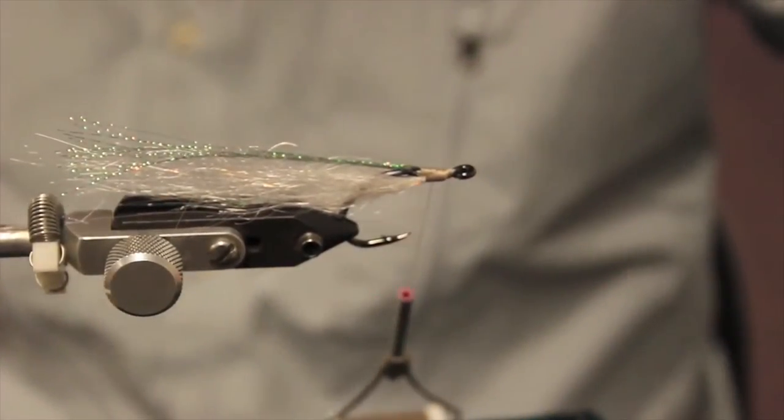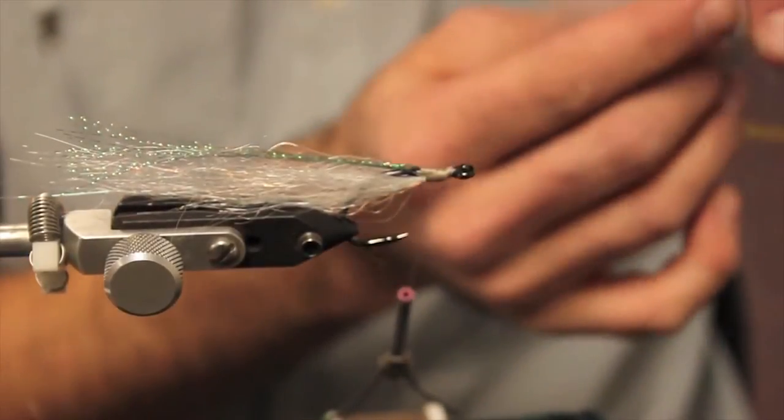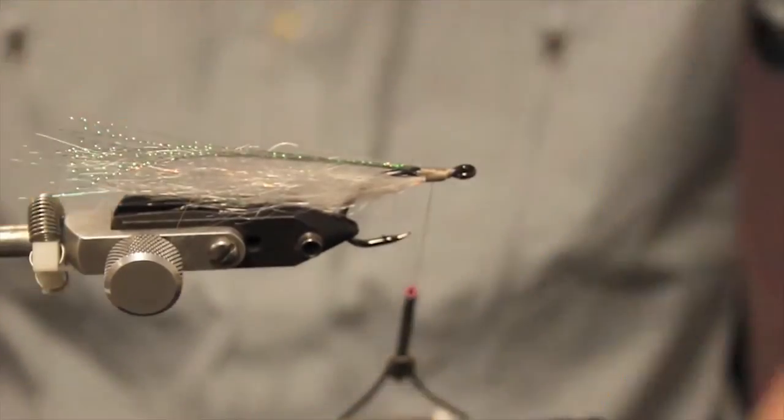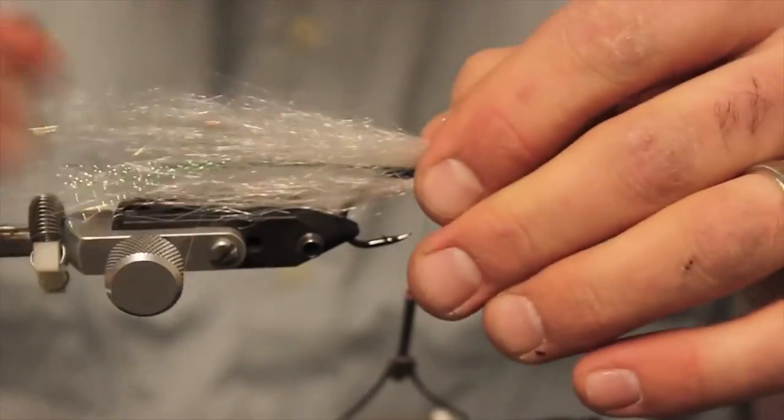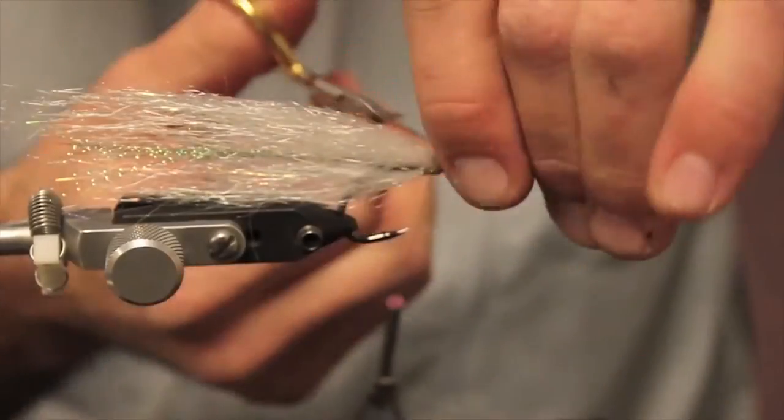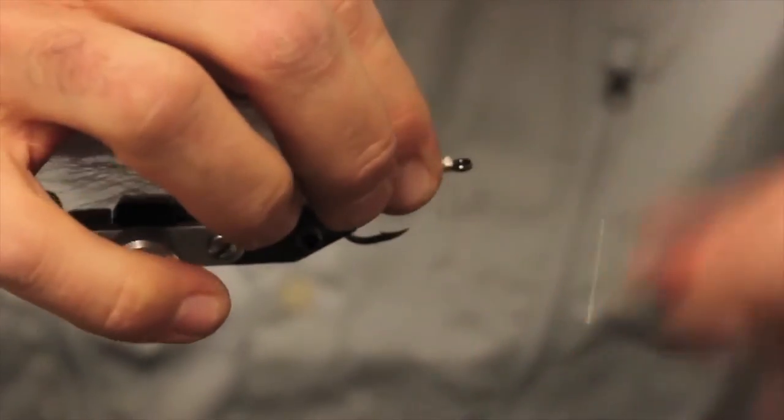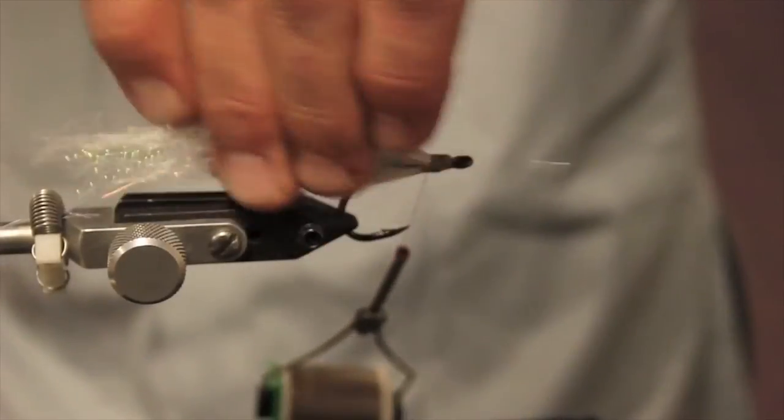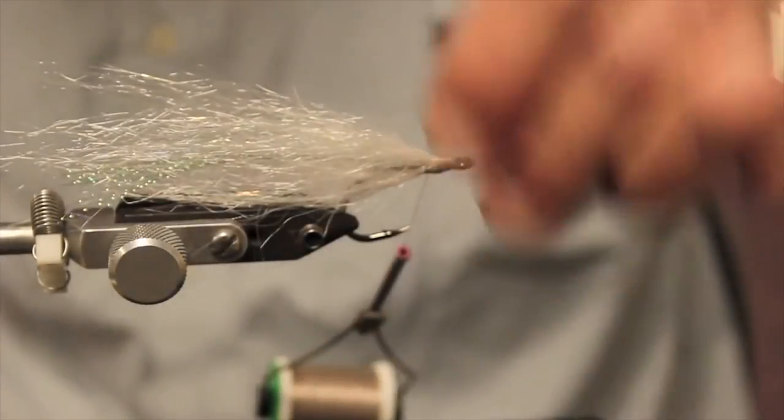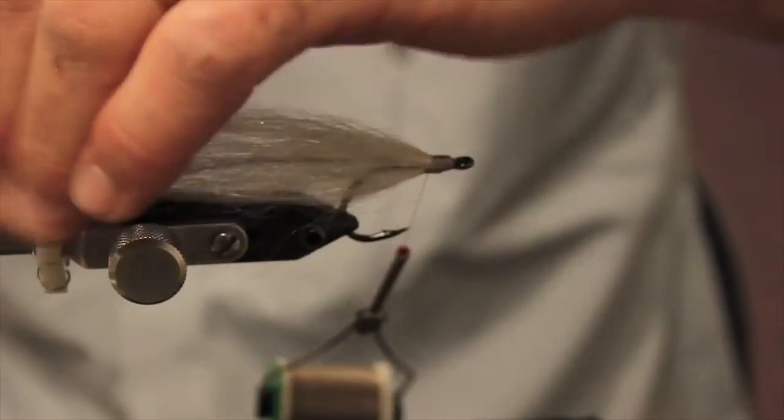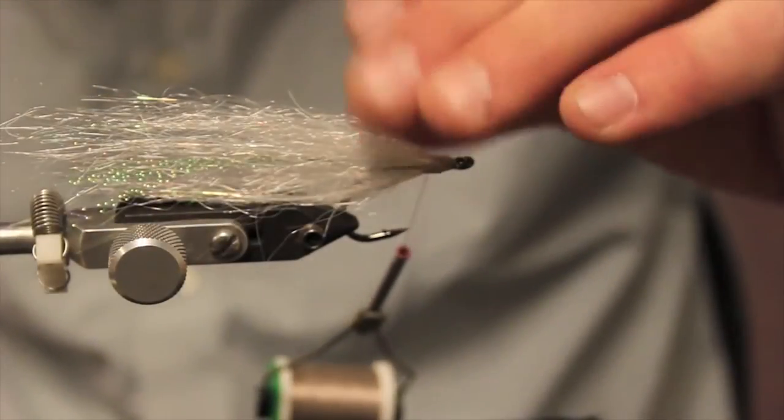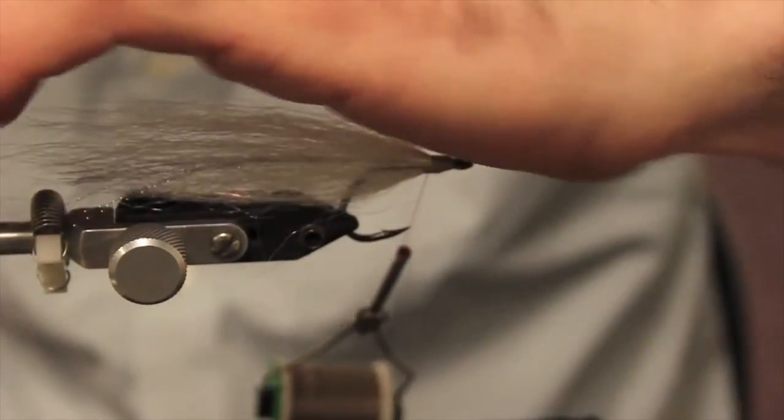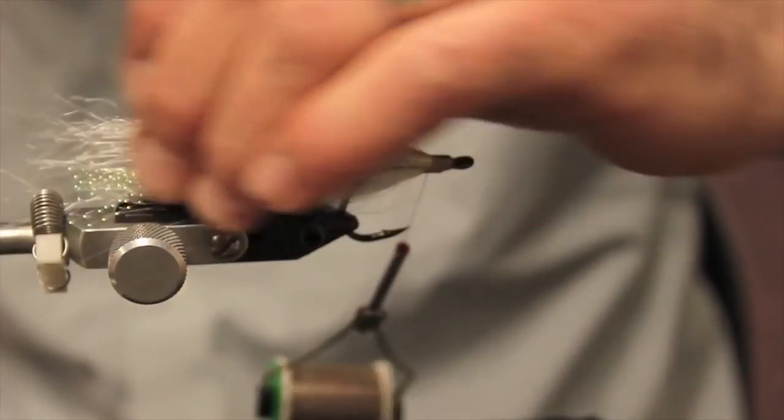I'm going to go with white again just because most of the baitfish patterns are primarily white pearl base. So you can see we're starting to get a profile. And this flash blend looks really nice because it has longer fibers in it. So you can see our body's kind of bulky here and you're going to get this nice curved profile. And you're all said and done.